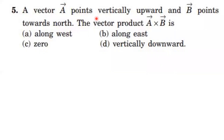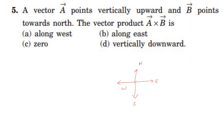Fifth question: vector A points vertically upward and vector B points towards north. Find A cross B. Taking north, east, south, and west directions — A is vertically upward and B is along north, so A and B are perpendicular. Using a right-handed coordinate system, A cross B gives the west direction. Therefore, for the fifth question, A cross B lies along west, and option A is correct.